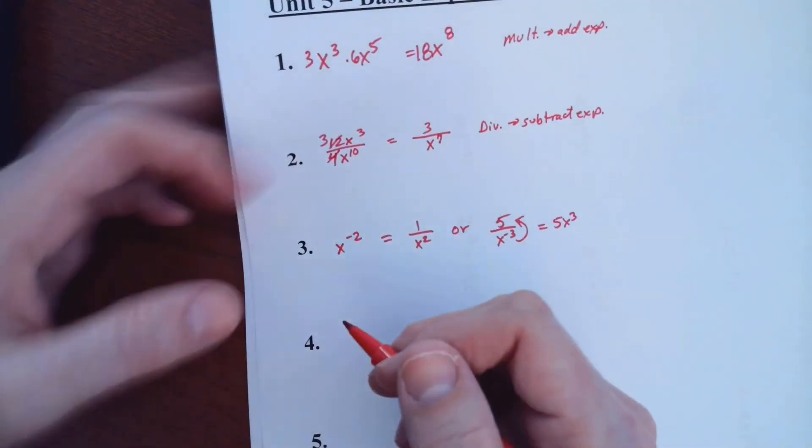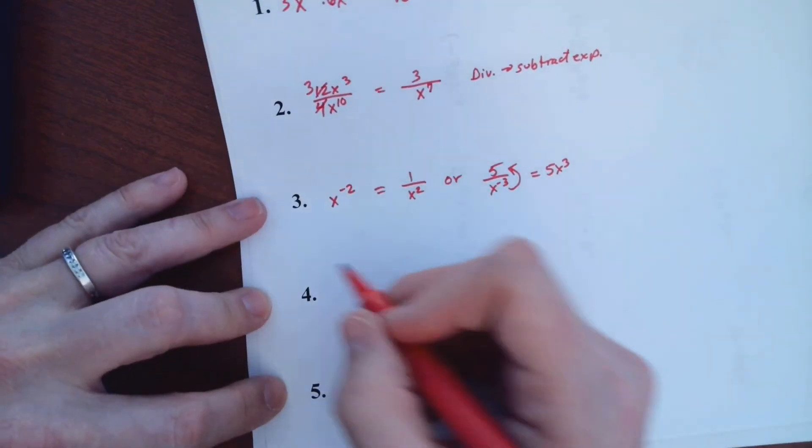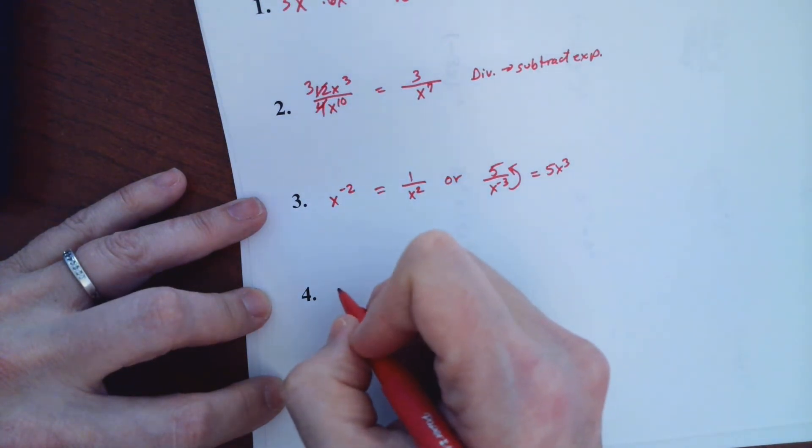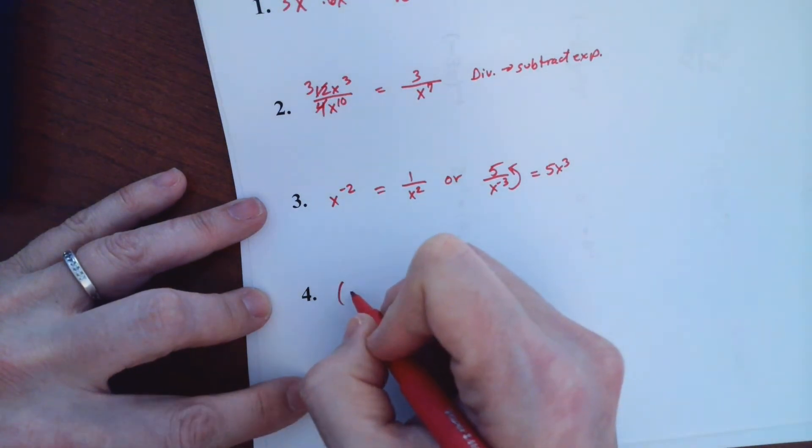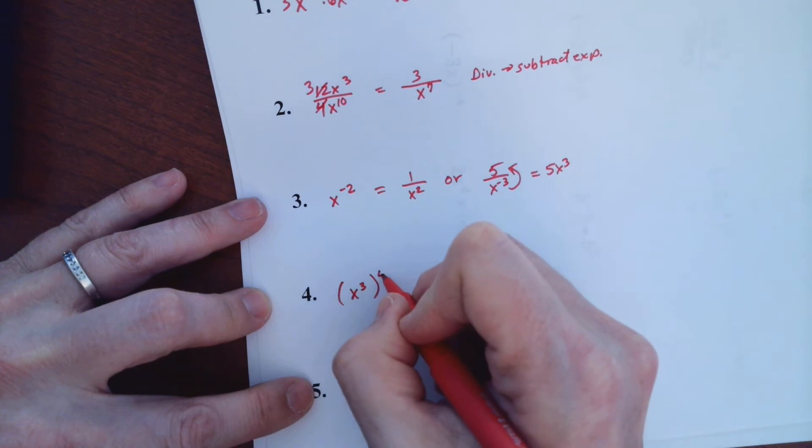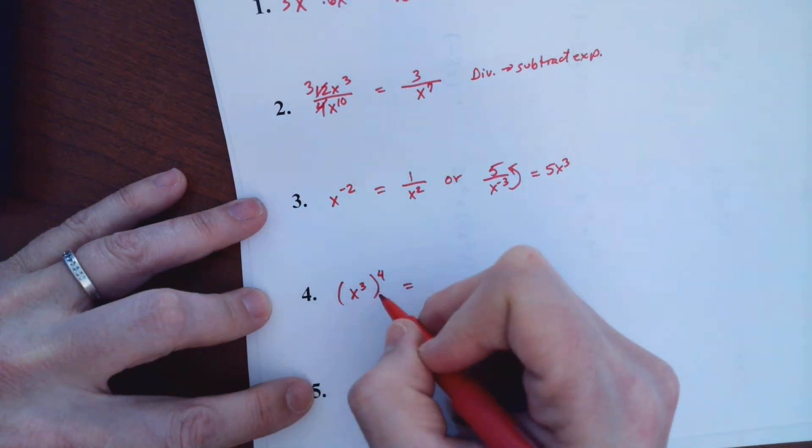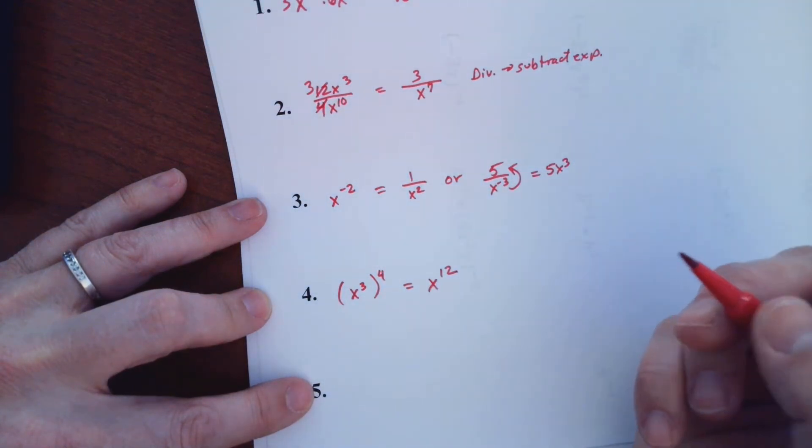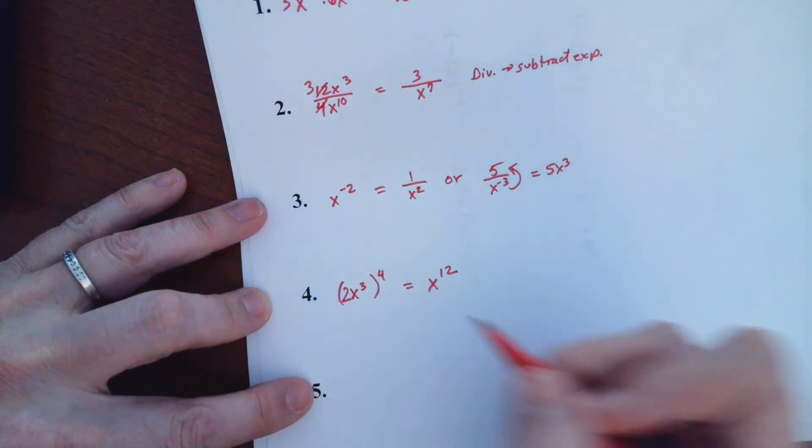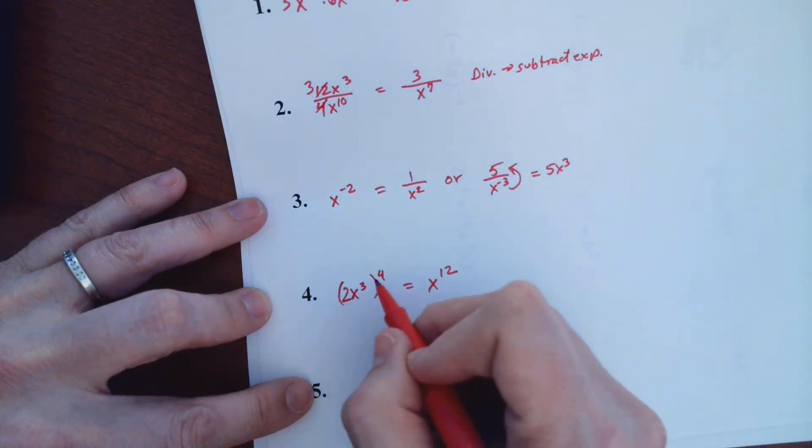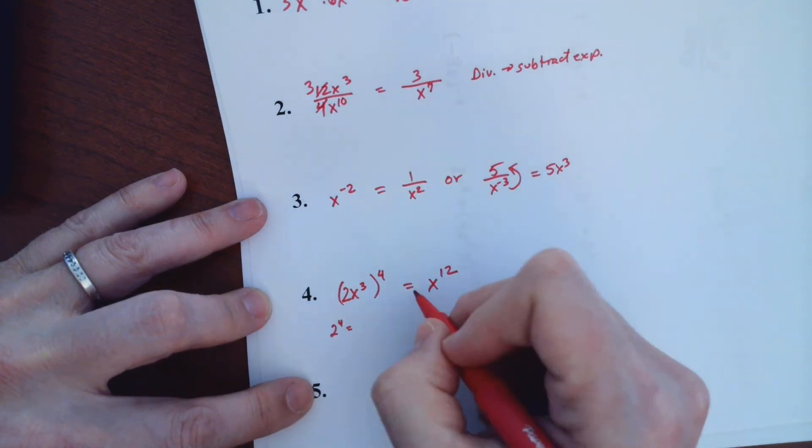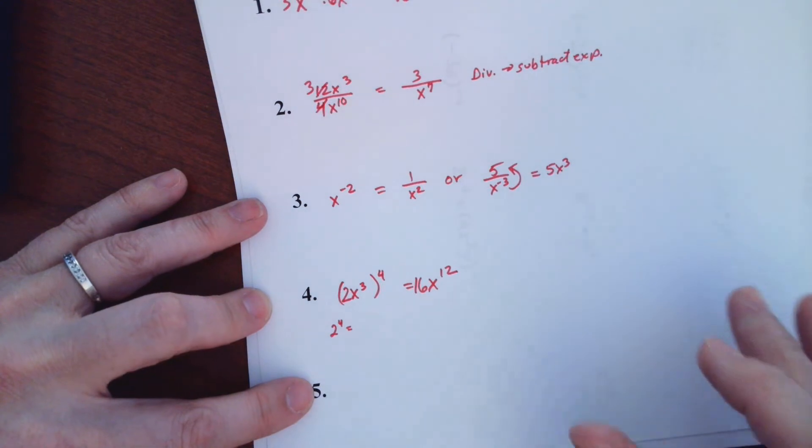So let's see, next one. Actually I kind of skipped one up here. Let's do like, let's say you have x to the third and this is to the fourth. When you have a power of a power, you're going to multiply exponents. This is saying x to the third four times, so 3 four times is 12. But remember that any time you have a number in front, like let's say you had a 2 right here, you do not do 2 times 4. It's 2 to the fourth power. So 2 to the fourth power means 2 times 2 times 2 times 2, which is 16. So that's the hardest one for people.